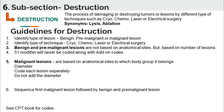Malignant lesions are based on anatomical site and which body group they belong to. The coder must identify the diameter as mentioned by the physician in the medical record. Each lesion must be coded separately, and the coder should not add the diameters of the same anatomical site or different sites within a body group.